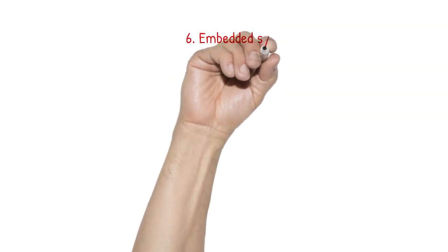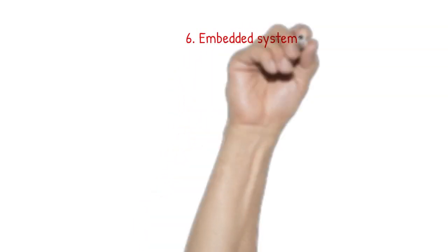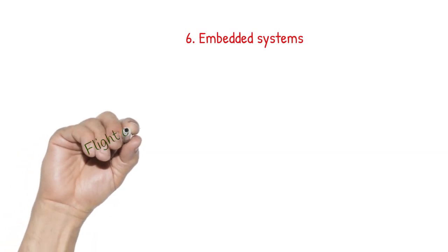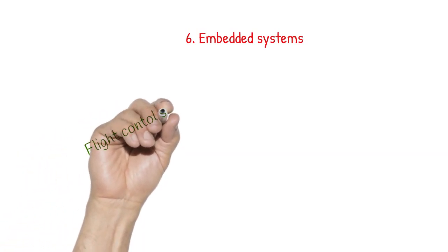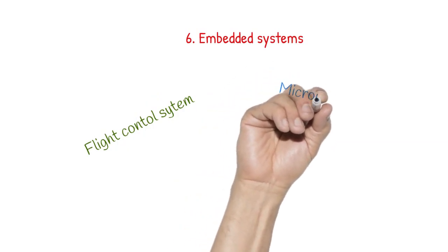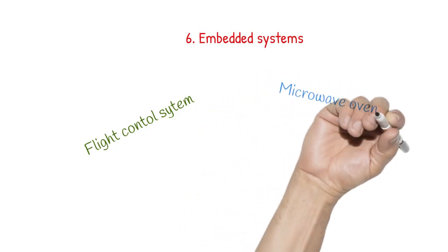Embedded systems are systems devices that have a computer embedded within them. Examples could be flight control systems or home appliances such as microwave ovens, vehicles control systems and entertainment systems, and medical equipment.